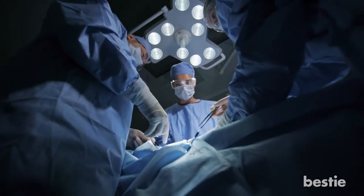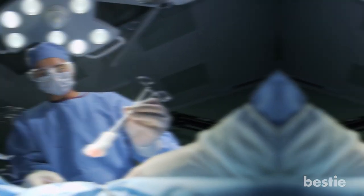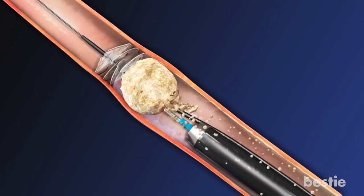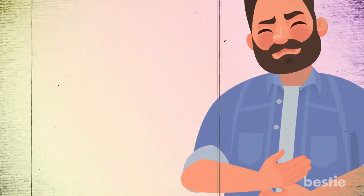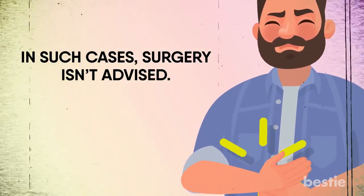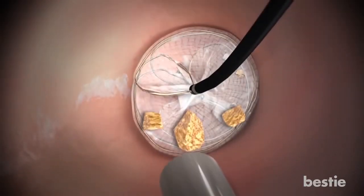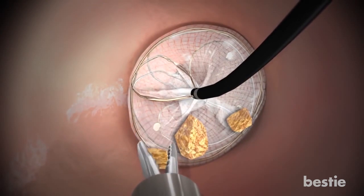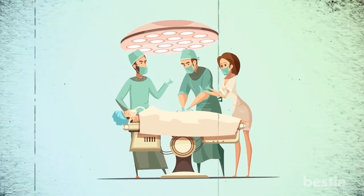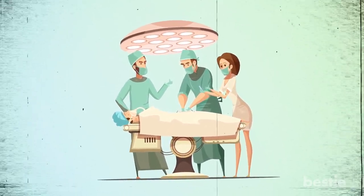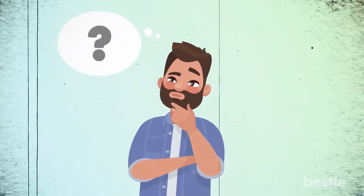The next step is tunnel surgery. Such surgical procedures are generally used when a stone has grown too large. A small incision is made in the back and the stone is removed physically. In certain cases, stones can get stuck in the bladder — in such cases, surgery isn't advised. Therefore, ureteroscopy is used for treatment. A ureteroscope is a medical device — basically a small wire with a camera attached. A doctor inserts it in the urethra and passes it into the bladder, where the stone is snagged using a small cage and finally removed.